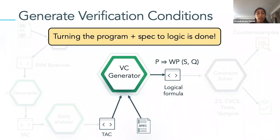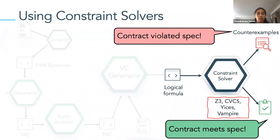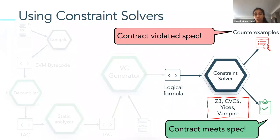Now we have a logical formula, and all we need to do is check whether it's valid. The Certora Prover uses constraint solvers — there are really good ones out there, for example Z3, CVC5, and Eldarica. These solvers are very efficient and highly scalable at checking logical formulas. Even for our benchmarks where the logical formulas are really big, constraint solvers handle them very efficiently. You give the formula to the solver, it checks for validity, and if valid, we're good to go; otherwise, it finds a counterexample.